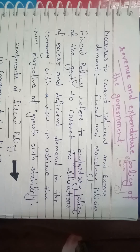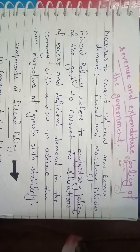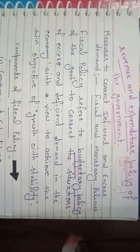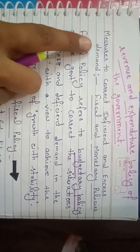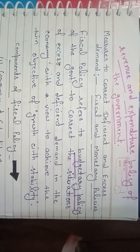In this video we will understand the measures to correct deficient demand and excess demand. The problem of excess demand and deficient demand occurs when current aggregate demand is more or less than the aggregate demand required for full employment equilibrium. These problems can be solved by bringing a change in the level of aggregate demand. We will study fiscal policy and monetary policy to correct the level of demand.